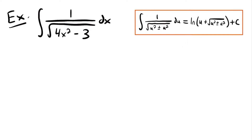So if we look at this function, we have 1 divided by the square root of u squared, where u is a function of x, plus or minus a squared, where a is a constant. And so if you look at our function here, we have 1 divided by the square root of 4x squared, a function of x, minus 3, a constant. And so this matches up with this function right here in this integration rule.